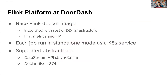To help people at DoorDash leverage Flink, we created a stream processing platform. Our platform provides a base Flink Docker image with all necessary configurations well integrated with the rest of DoorDash infrastructure. Flink's high-availability setup and Flink internal metrics are available out of the box. For better failure isolation and the ability to scale independently, each Flink job is deployed in standalone mode as a separate Kubernetes service. We support two abstractions: DataStream APIs for engineers and Flink SQL for casual data users.